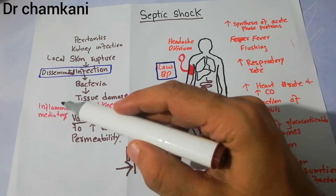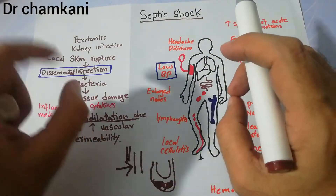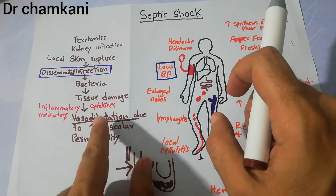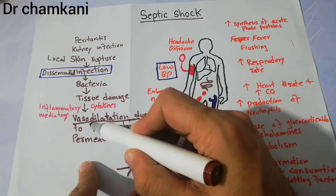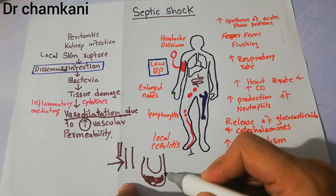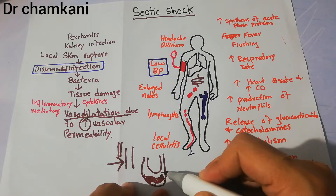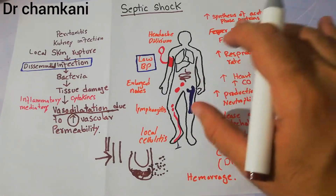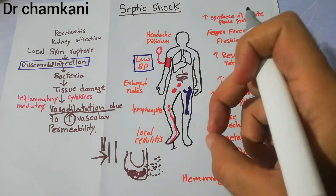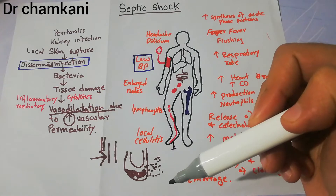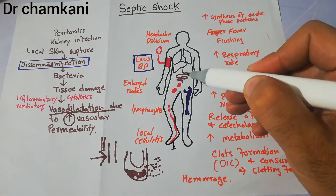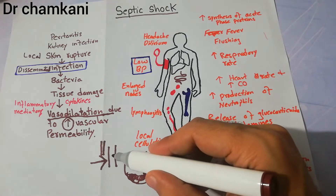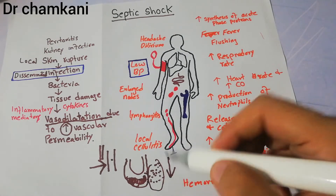The inflammatory mediators and cytokines released by bacteria during the inflammatory process lead to vasodilation and also increased vascular permeability. In this condition, a lot of fluid comes out into the tissue, which decreases the amount of blood volume available for circulation. So the circulating blood volume decreases due to both pooling in dilated vessels and oozing of fluid into the tissue.